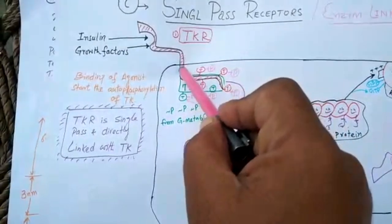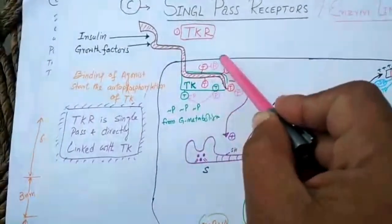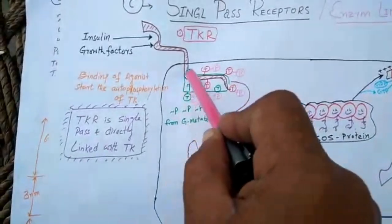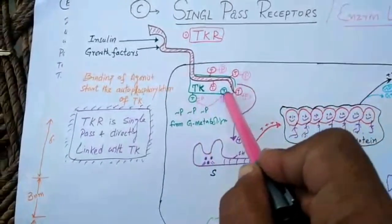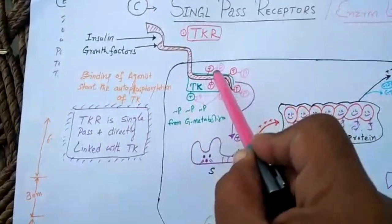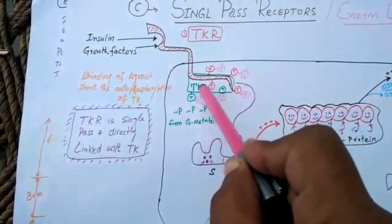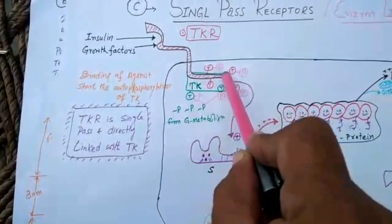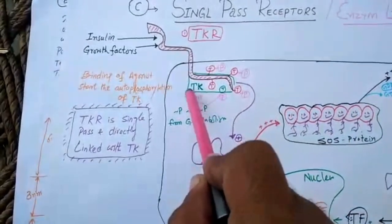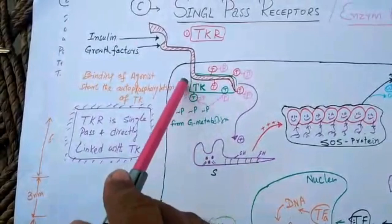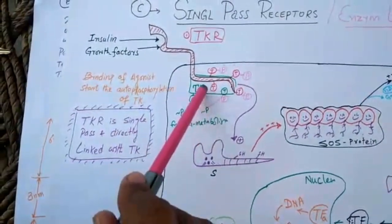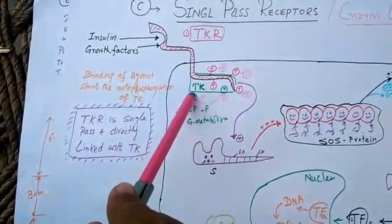That's why this is known as single cross. And inside the cell, there is tyrosine kinase protein. As there are various tyrosine residues in this protein, that's why this is known as tyrosine kinase protein. This is directly linked with these enzymes. That's why it is known as enzyme-linked protein.